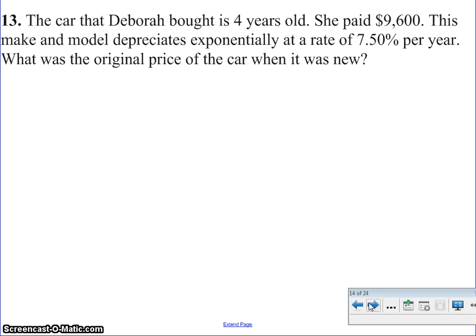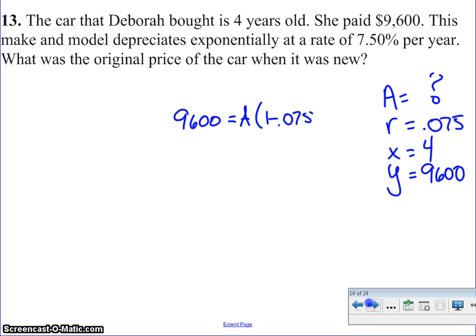All right. A car that Deborah bought is 4 years old. So let's start again. A equals R equals. X equals. Y equals. So it was 4 years old. She paid $9,600. This make and model depreciates exponentially at a rate of 0.075. What was the original price? So plugging it in, I get 9,600 equals A times 1 minus 0.075 all to the fourth power.